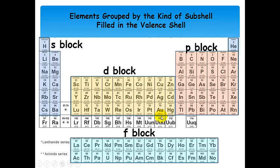Also, just a reminder: this group on the periodic table — the d block — is what we call the transition metals. The terms d block and transition metals are two very common names for that part of the periodic table.